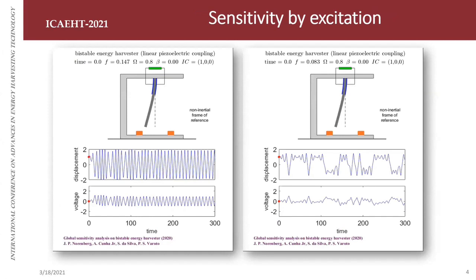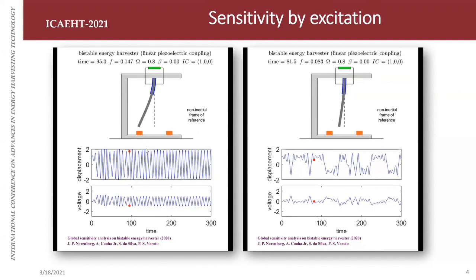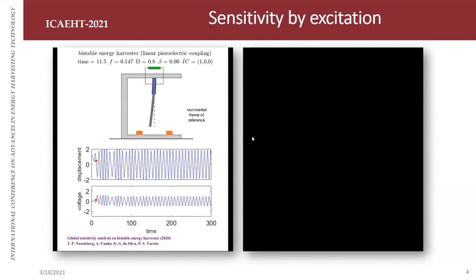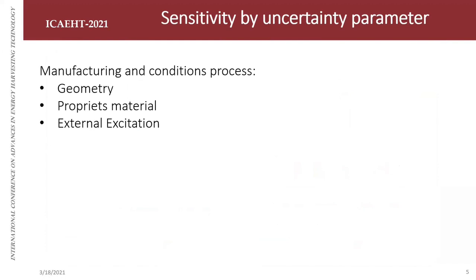This classical system presents high sensitivity to some parameters. Here we can see two videos and we can visualize two different behaviors. On the left side, we have periodic behavior; on the right side, chaotic behavior. We just changed the frequency and amplitude of excitation, which shows that it's a high sensitivity system.